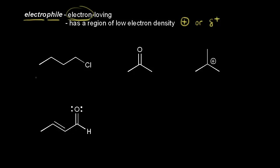So first let's look at this compound. We know that chlorine is more electronegative than carbon, so chlorine is going to withdraw some electron density. And if chlorine is withdrawing electron density away from this carbon, this carbon is partially positive. So this carbon is the electrophilic center of this compound.